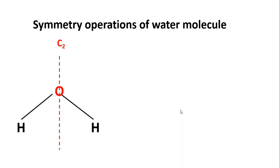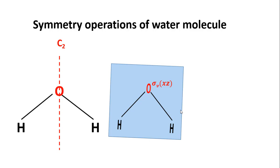The C2 axis is present in the molecular plane. It passes through the oxygen atom and bisects the two OH bonds. The σVxz plane is the molecular plane, cutting through all the atoms. One half of each atom is above this plane and another half is below. During reflection, the upper half of each atom becomes the lower half and vice versa, but the position of the atoms is not changed. During rotation about the C2 axis, the two hydrogen atoms are interchanged.